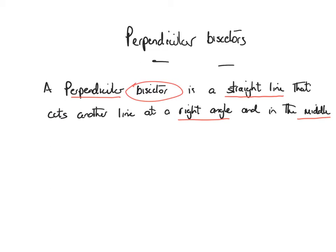To bisect something means you cut it in the middle. So, for example, if I've got a line there, the perpendicular bisector would cut it in the middle — denoted by that — and it would also cut it at a right angle. So there's the original line, and that would be the perpendicular bisector.